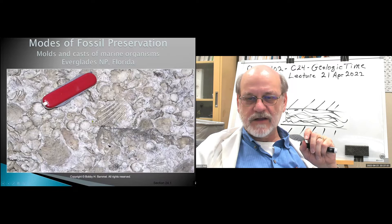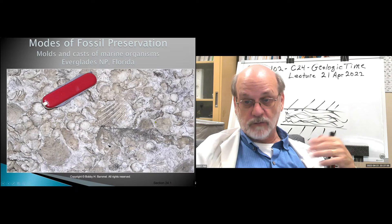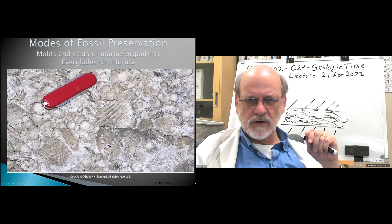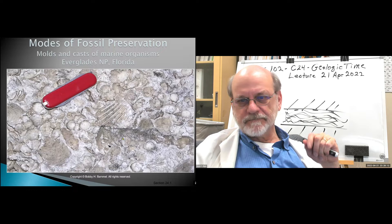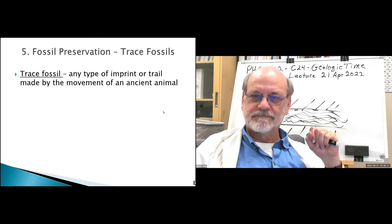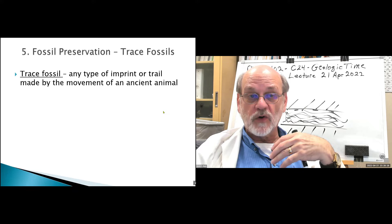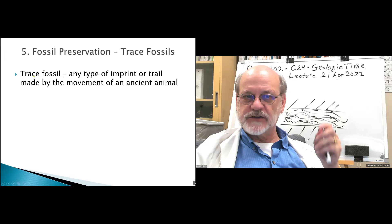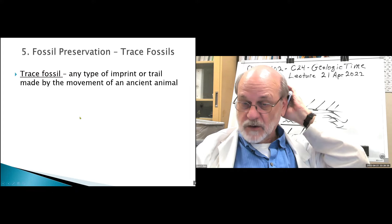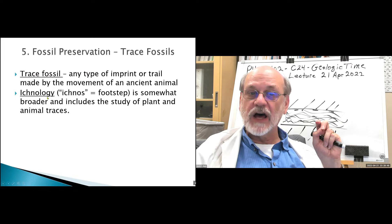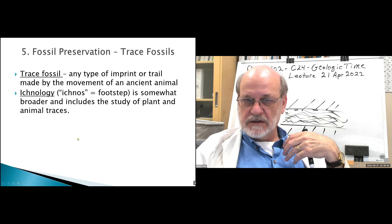Here are examples of molds and casts — you can detect what were at one time shells, possibly crinoids. A trace fossil is one where the fossil doesn't have to be directly related to the organism — it could be just evidence that the organism was there, like a footprint. That's a trace fossil: a trace of the animal's or plant's existence, or their movement across a surface. The study of trace fossils is called Ichnology — 'ichnos' means footprint.